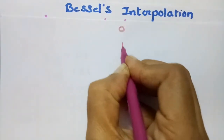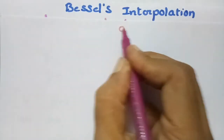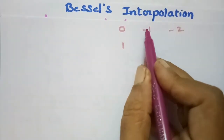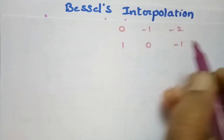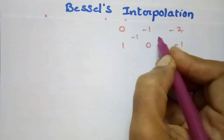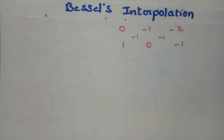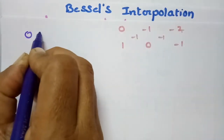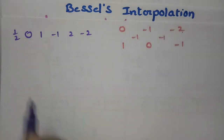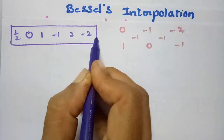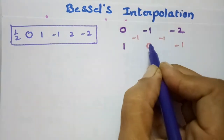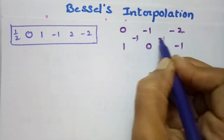To write Bessel's formula, we arrange the difference table indices in decreasing order: 0, minus 1, minus 2 and 1, 0, minus 1, with a half index in between for the averaged terms. This gives us the structure: 0, half, 0, 1 and so on.